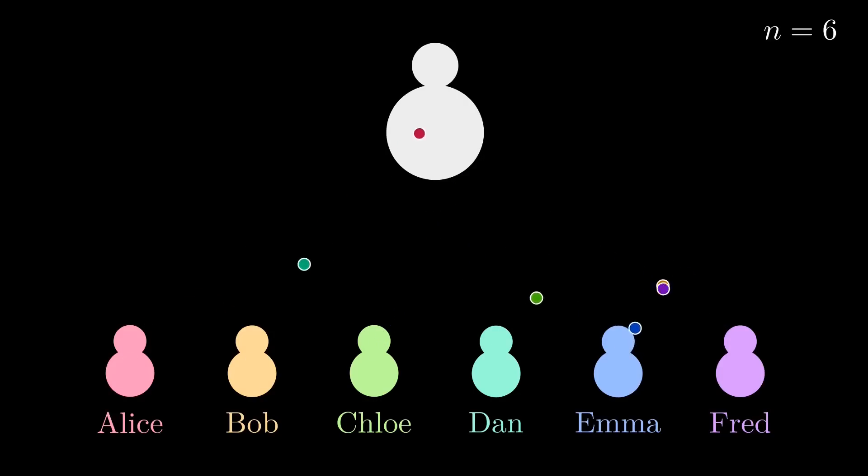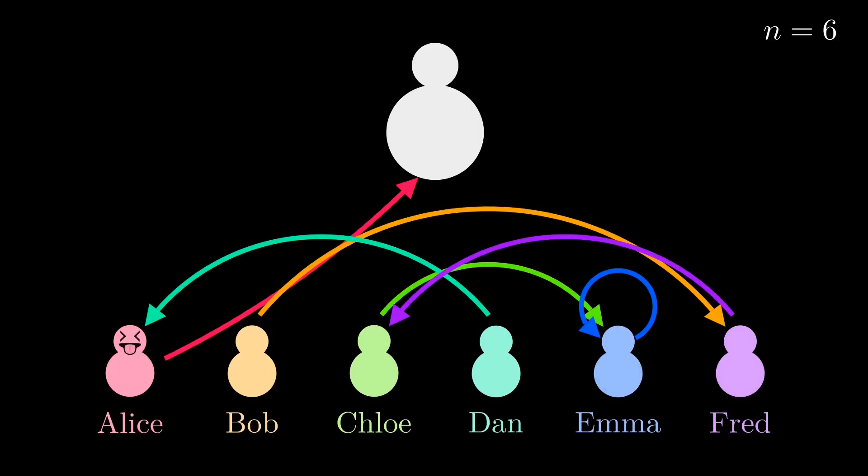In the edge case where Alice is the Rascal, after mapping she aims at herself, and this is still reversible. After all, Alice's target, herself, is the Rascal.